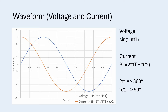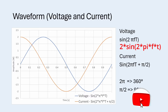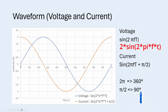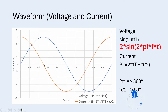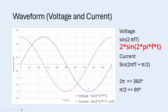Let's say we have a voltage waveform with the equation sine 2πft, which you can see with the blue line on the screen. It starts off at zero, then around the first quarter of the waveform it goes to its peak. In the middle of the waveform it's at zero, at three quarters it's at its negative peak, and at the full cycle it comes back to its original position.